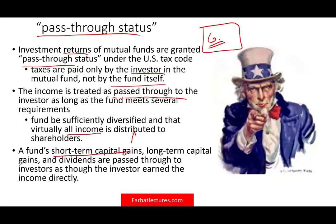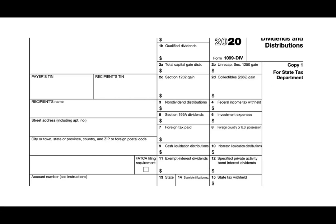Funds can have short-term capital gains, long-term capital gains, and dividends — all passed through to the investors, who must pay taxes on them. Short-term means holding a security for less than a year; long-term means holding it for more than a year. They are treated differently for tax purposes — short-term has a higher tax bracket than long-term. At the end of the year, you receive a 1099 dividend and distribution form showing dividends, capital gain distributions, any federal income tax withheld, exempt interest dividends, and foreign taxes paid.